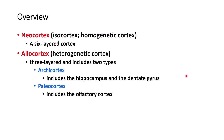You don't find the allocortex in the majority of the brain; you only find it in specific areas. One is called archicortex, which is in the hippocampus and dentate gyrus, and they are located in the temporal lobe of the cerebrum. The other one is called paleocortex, which is in the olfactory cortex, part of the limbic system. The hippocampus and dentate gyrus are also part of the limbic system.